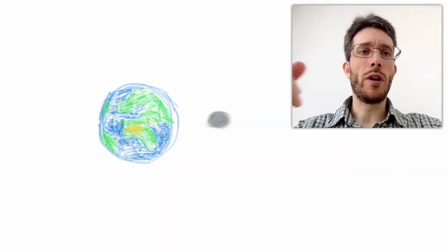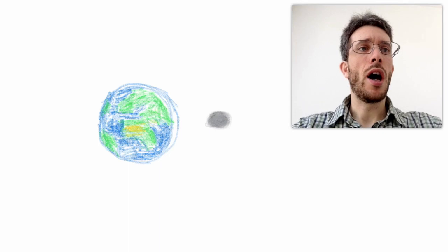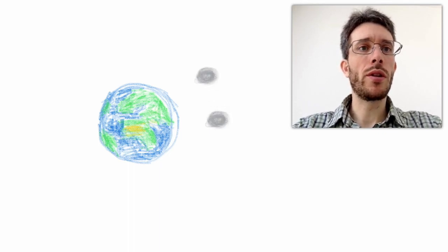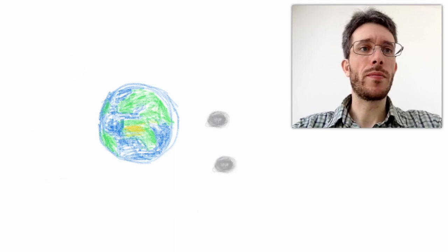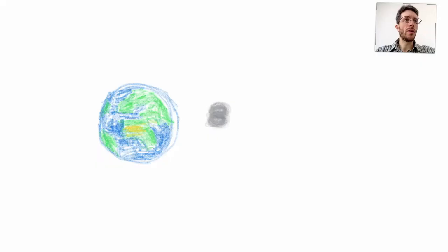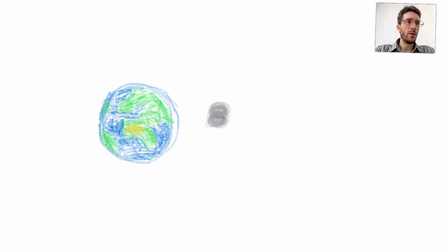In this video, I want to calculate how long it takes the Moon to go around the Earth once. How are we going to do that? We're going to be using several laws: Newton's second law of motion, F equals ma.